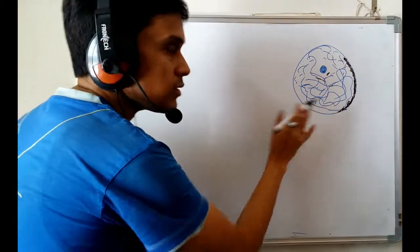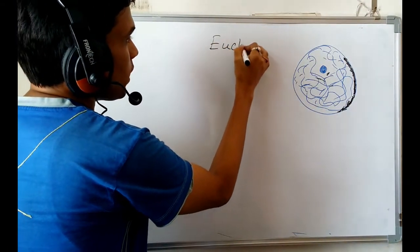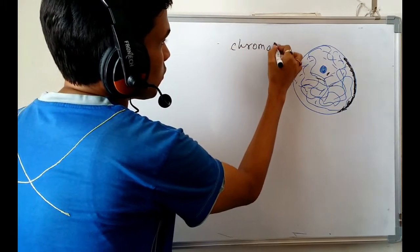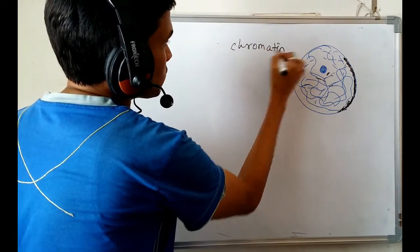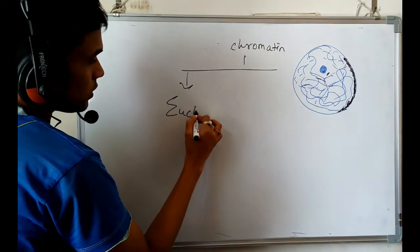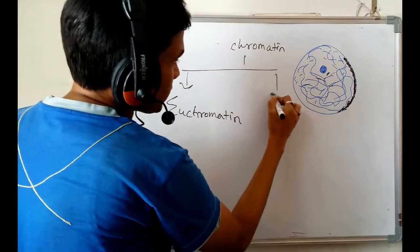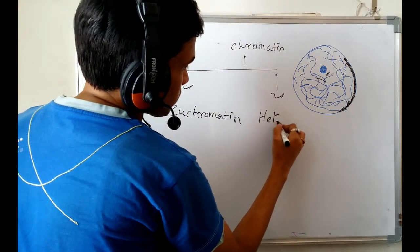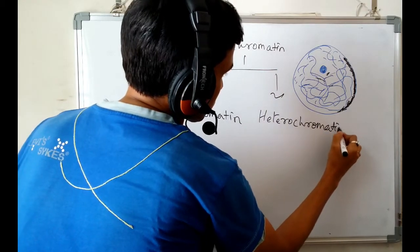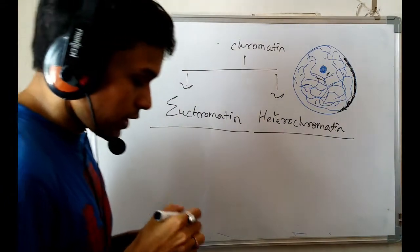Before explaining further, let me tell you one thing: the chromatin structure is made up of euchromatin and heterochromatin. So what is euchromatin and what is heterochromatin?